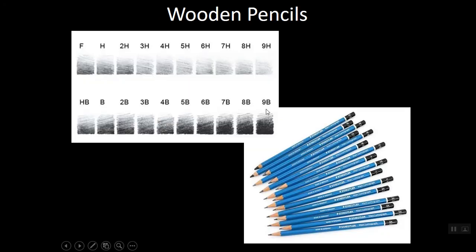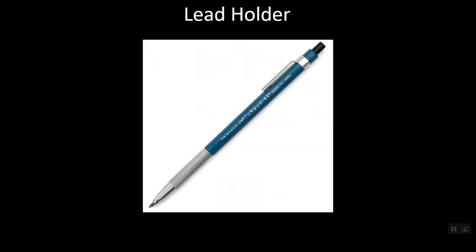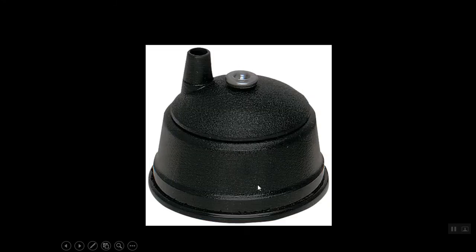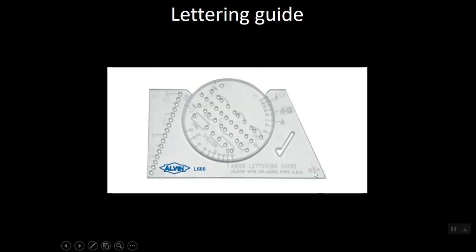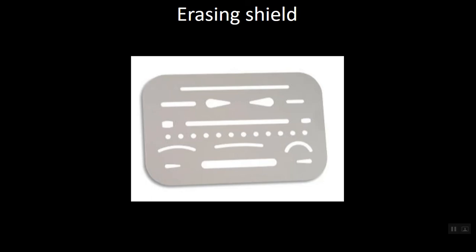We talked about pencils today — lead quality, lead grades, and mechanical pencils, as well as lead holders. If we have a lead holder, just understand you're going to need to sharpen it with a specialized tool because you can't stick it in a pencil sharpener. The lettering guide helps us lay down horizontal guidelines for doing lettering. The erasing shield helps us erase precisely to a specific point on the drawing without accidentally erasing good lines we want to keep.